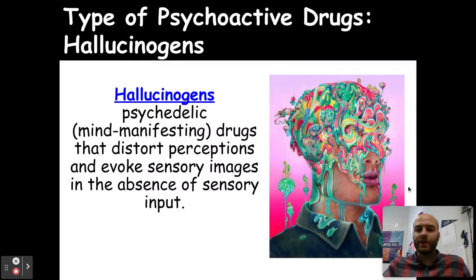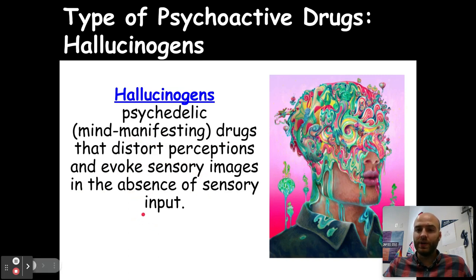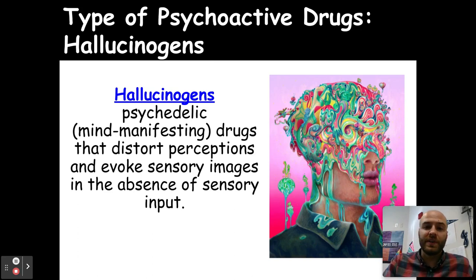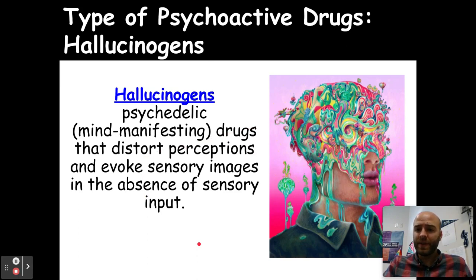Our final type of psychoactive drugs are hallucinogens. Hallucinogens are psychedelic — mind-manifesting drugs that distort perceptions and evoke sensory images in the absence of sensory input. For example, LSD can make people think they see hallucinogenic psychedelic images of different geometric shapes, or the face of the person they're talking to might seem to melt — things that aren't actually happening in reality.